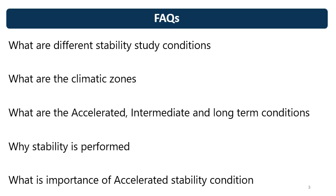The questions include: What are the different stability conditions or stability study conditions? What are the climatic zones? What is the accelerated condition, intermediate condition, and long-term condition for stability testing? These are the three different stability conditions. Then, why is stability performed? You can answer that it is for establishing or demonstrating stability, establishing the expiry period, obtaining regulatory approval based on stability data, and establishing recommendations for storage conditions.